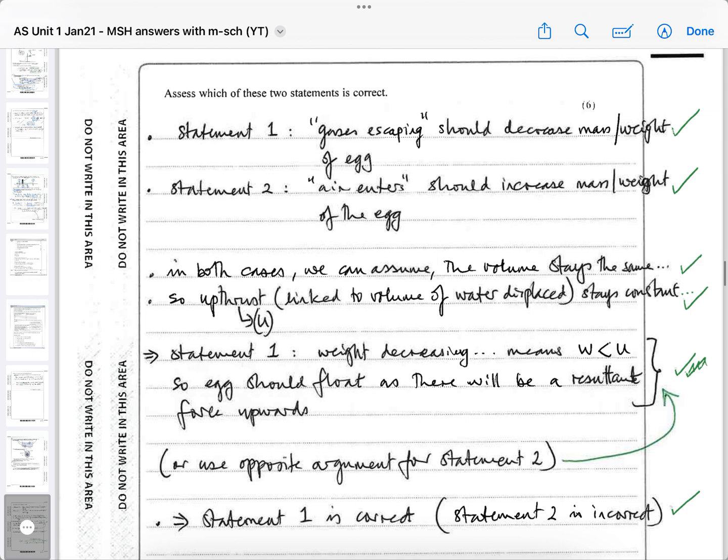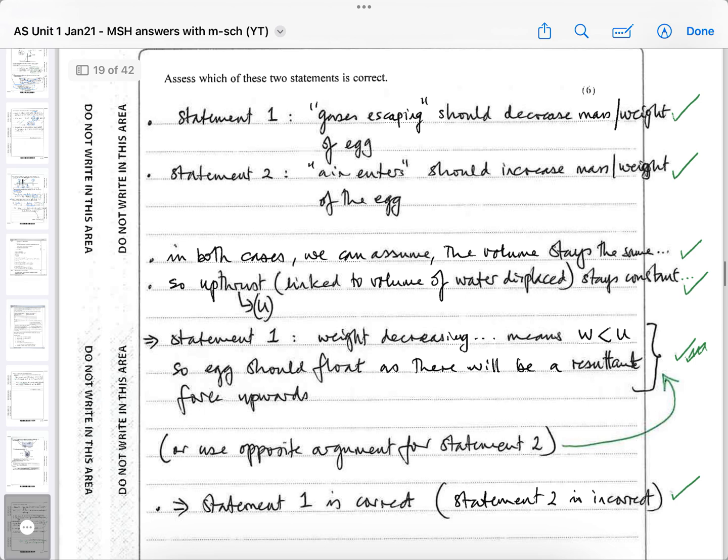Or use opposite argument for statement two. You could then go and explain statement two. Statement one is therefore correct. Statement two must be incorrect, because statement two, if we did the opposite argument, statement two the weight would increase. And if the weight increased and upthrust hasn't changed because the volume hasn't changed, then statement two would imply the egg will not be able to float because it's got heavier and the upthrust hasn't changed. So statement two again is incorrect. And that's how you get one, two, three, four, five, six, according to the content they're looking for.